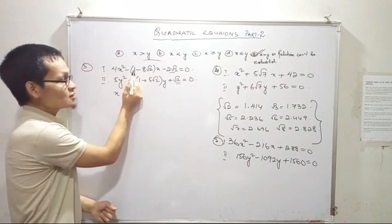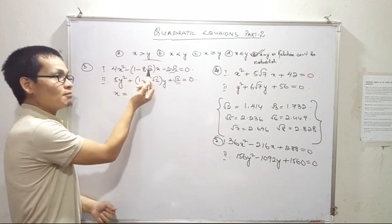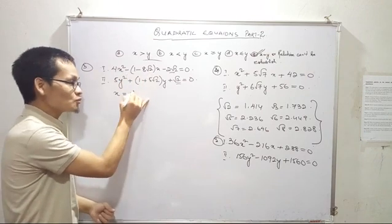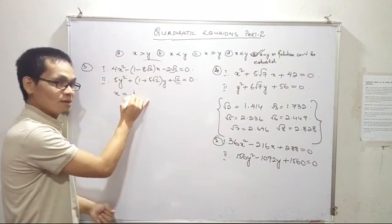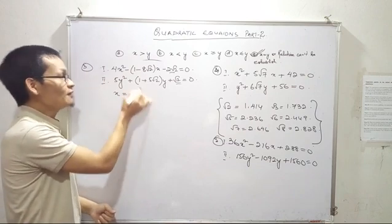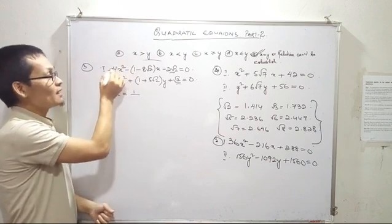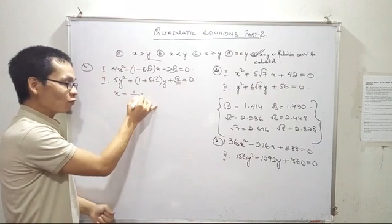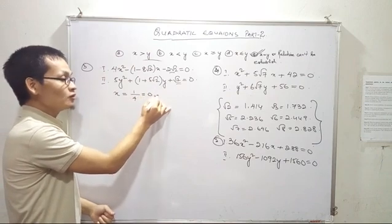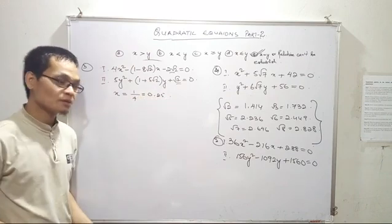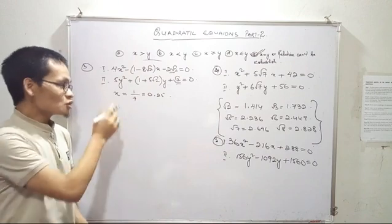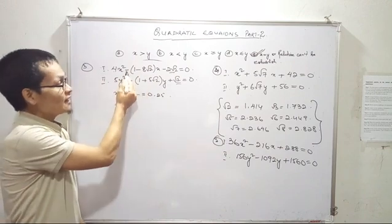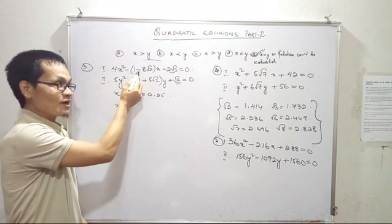Minus into plus is minus. Minus 1 — so the answer is plus 1. Divided by x squared, the coefficient is 4, so 1 divided by 4 is 0.25. So next x equals minus into minus, which is plus 1.